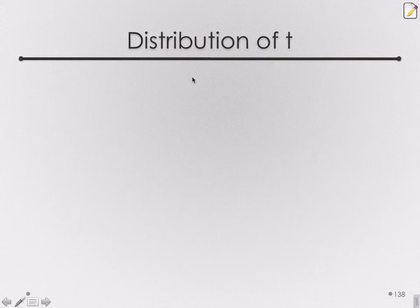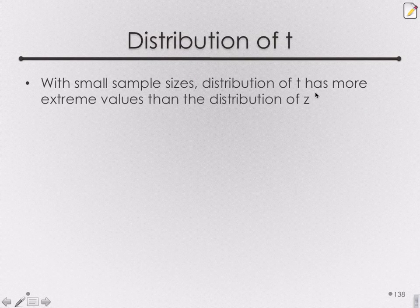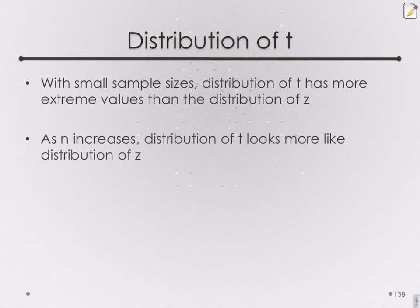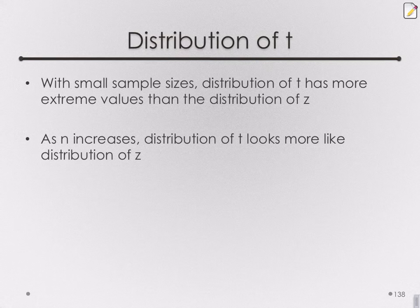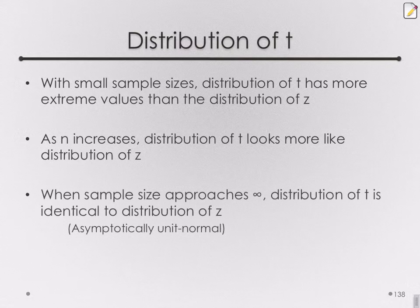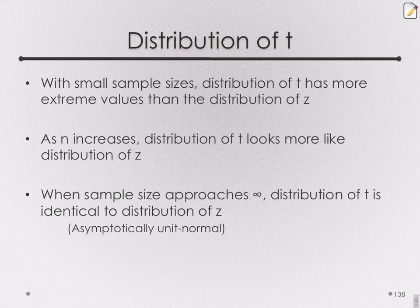So what's happening here? A quick summary: with small sample sizes, the distribution of t has much more extreme values than z. We also saw that as we increase the sample size, the distribution of t starts to look more like the distribution of z, which should make sense intuitively. By increasing sample size, our estimate of the variance — the thing we lost — is certainly going to get better. And when sample size approaches infinity, the distribution of t is identical to z. So once we get the entire population in our sample, we're estimating the variance perfectly, so the t and the z would be identical — asymptotically unit normal.